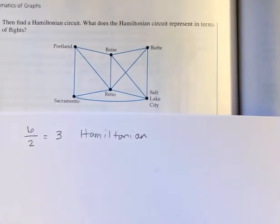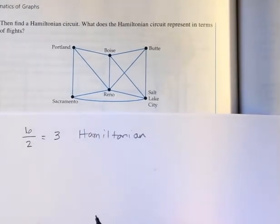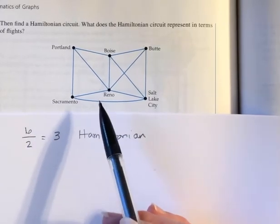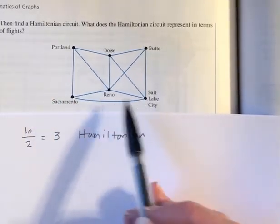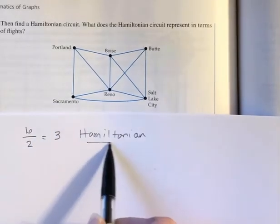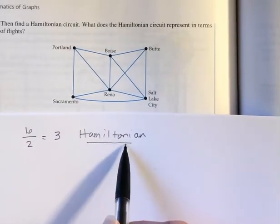Then they want us to find a Hamiltonian Circuit. You can start anywhere, and sometimes it depends on the graph. There might only be one correct answer. This particular graph, there are a lot of correct answers. Again, for this, all you have to do is use the vertices, not the edges.